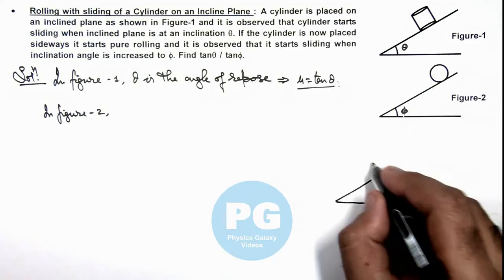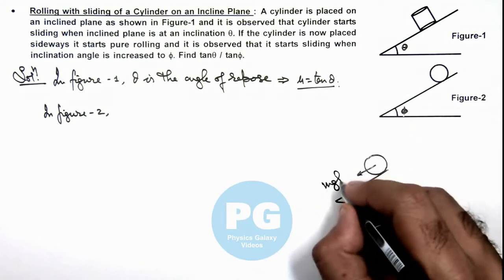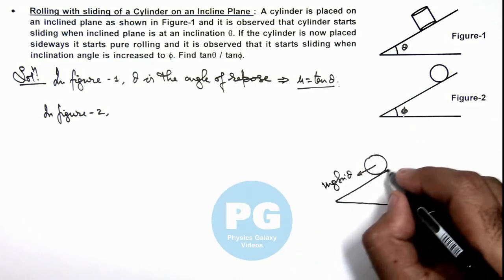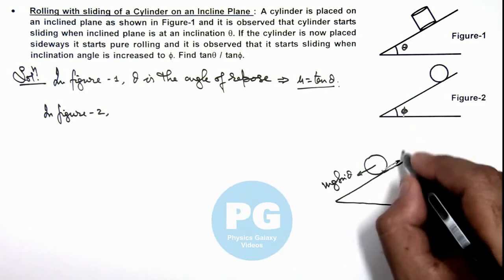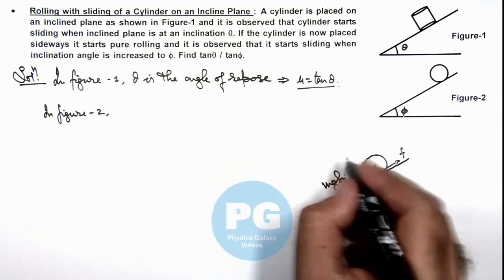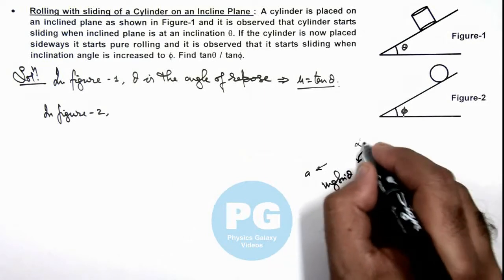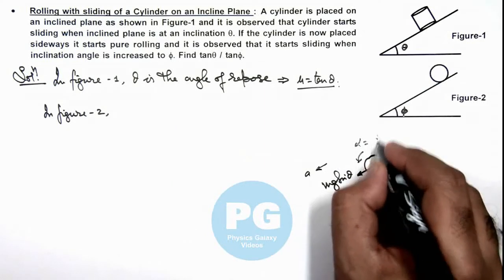Of this cylinder, here we can see it is experiencing mg sine theta along the incline. And for pure rolling, if we consider angular friction to be acting in backward direction, here we can write if its acceleration is ay and angular acceleration we consider as alpha is equal to ay by r.